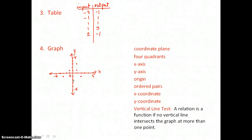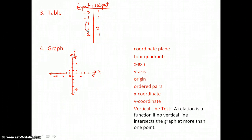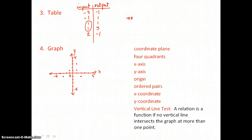We want to decide if this relation is a function. Looking at the table, we see that two input values repeat. That tells us it's not a function because 1 is paired to 1 and 1 is also paired to 3 — an input value is paired to two different output values, so it doesn't satisfy the definition of a function.